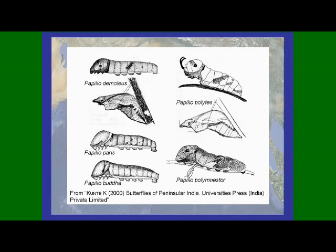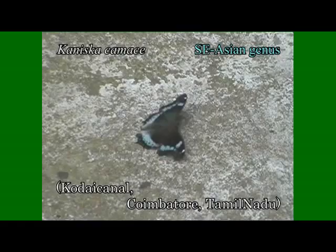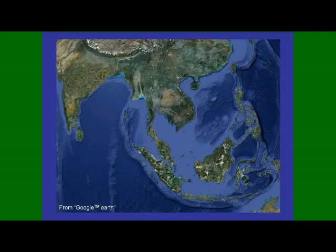Among these species, the last instars of Papilio demoleus, Papilio liometon, Papilio buddha, Papilio polites, and Papilio polium nestor are already well known. Recently, those of Papilio paris in southern India have also been illustrated. We also found that details of some Indian butterfly larvae have been reported on a website. According to this, the saddle-like marking of some south Indian Papilio helenus distinguishes the left and right half of their dorsal side, indicating individual variation in this morphology.